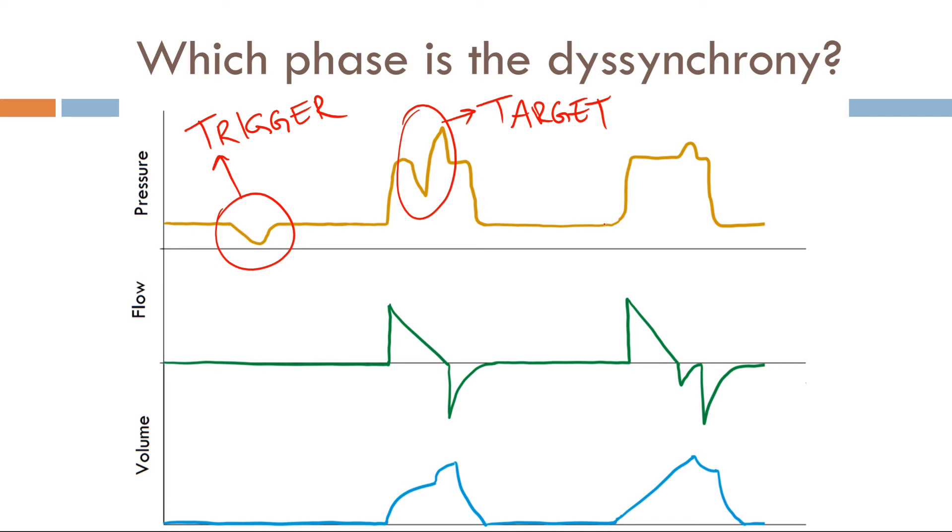Now continuing along here, another triggered breath. There's no issues with target, but there is an issue at the end of inspiration for the cycle phase. Therefore, this is a cycle dyssynchrony.